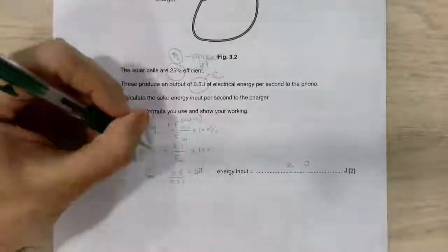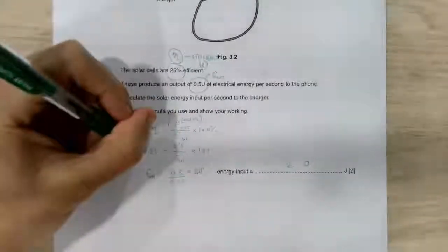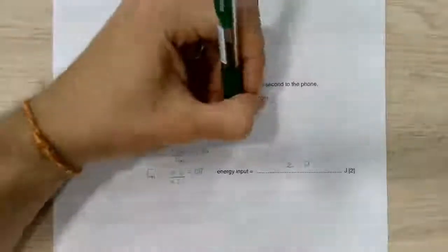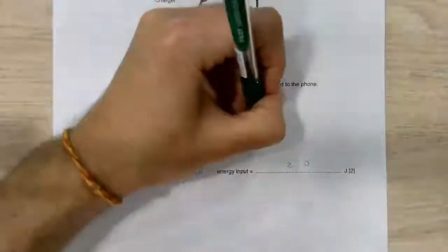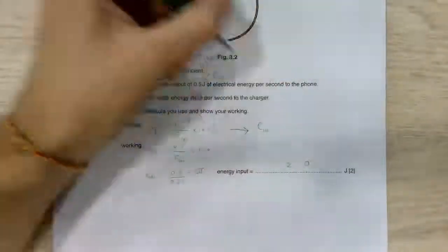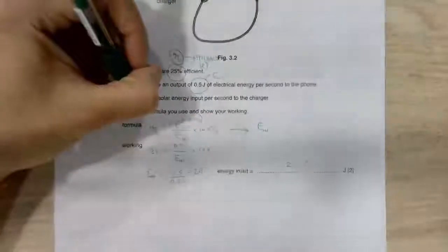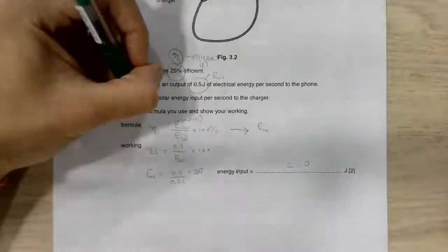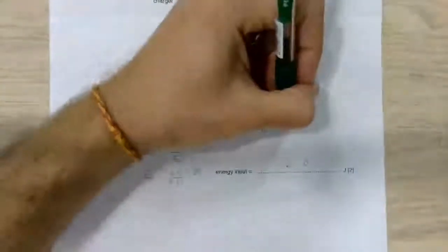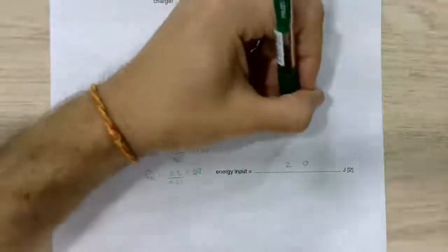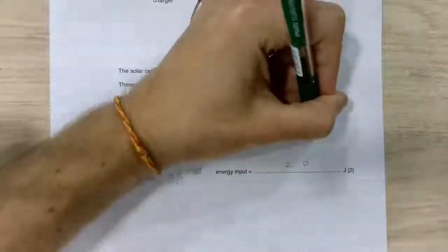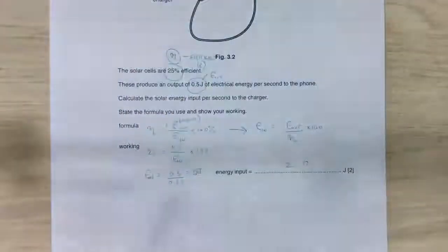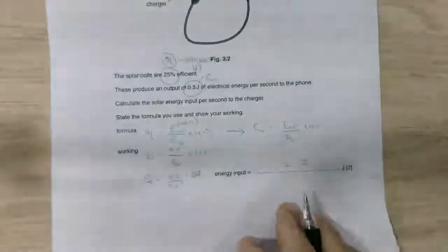Notice in this case, what I've done is I've substituted the numbers in first. You would be more than welcome to rearrange for simply the value of e in. In this case, if you did some rearranging, we'd bring this one up. Then what you would have is energy in is the energy out divided by the efficiency times 100. Remembering that efficiency should be in a percent form.